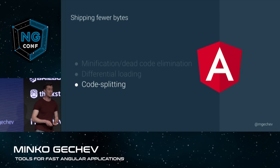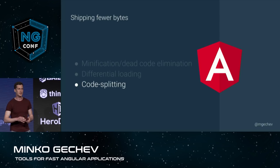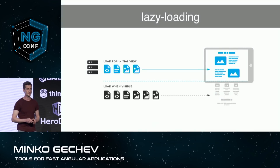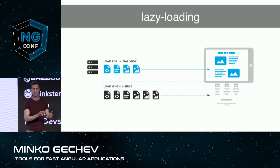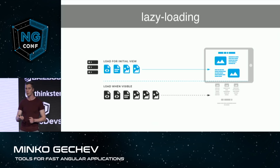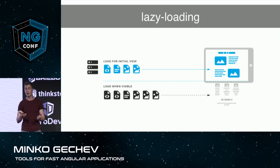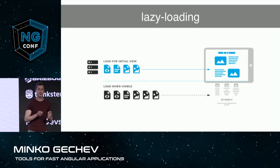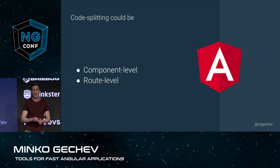Now let us go to an even more exciting part, which is code splitting. Code splitting is in general one technique which is a subset of a larger set of practices called lazy loading. With lazy loading, we just ship the minimum amount of assets which are required for the user at a given point. You might have seen this on Medium, where images which are currently visible in the viewport load as you scroll down and more images become visible.